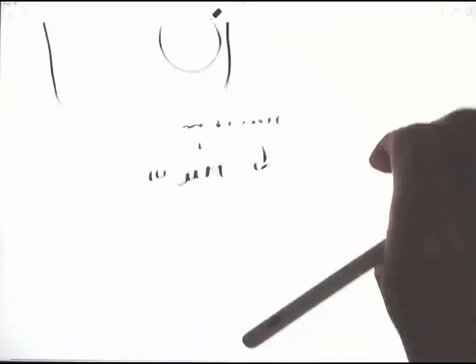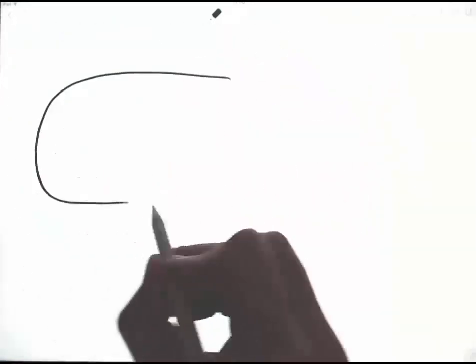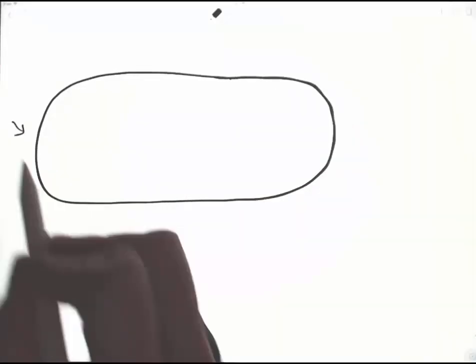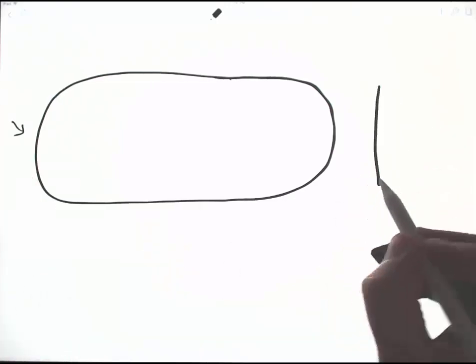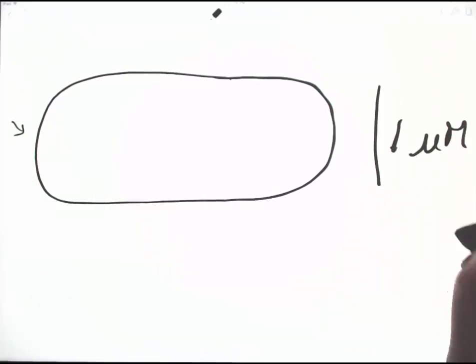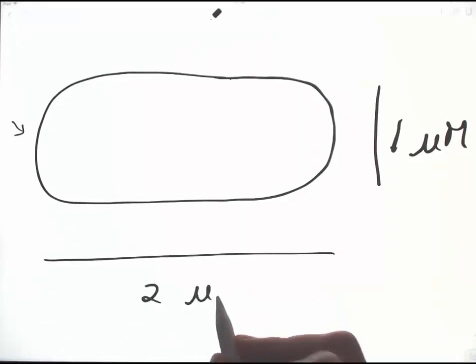The next part of our bacterial ruler is the bacterium. An E. coli has multiple flagella, but you don't need them for the bacterial ruler, so I'm leaving off those flagella. Here's 1 micron. The length, about 2 microns.